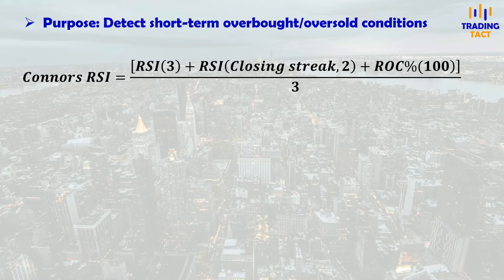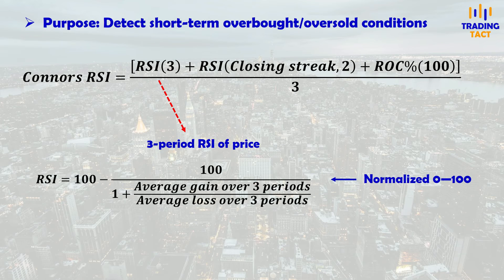The Connors RSI is made up of three components. The first is a regular 3-period RSI of prices, which normalizes momentum on a 0 to 100 scale.